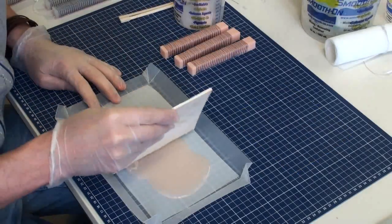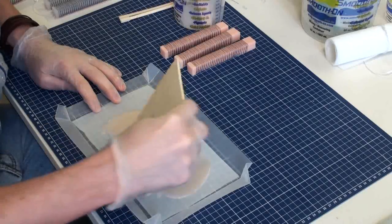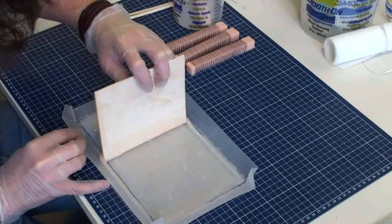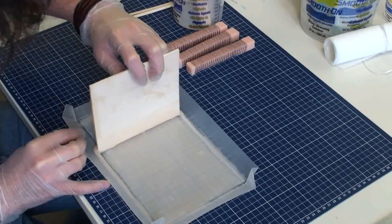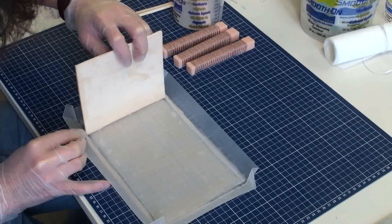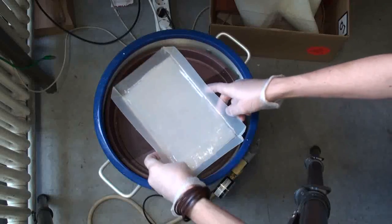We use a broad spatula to distribute the silicone. The silicone should be about 2mm high. This assembly also goes into the vacuum chamber for degassing again.